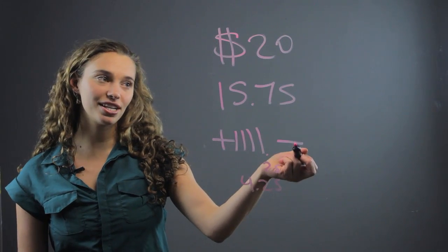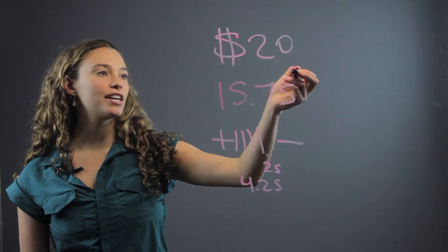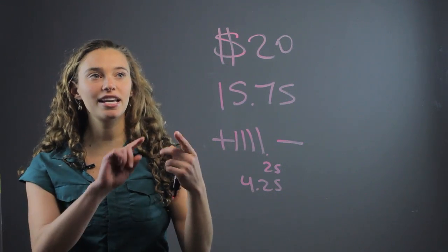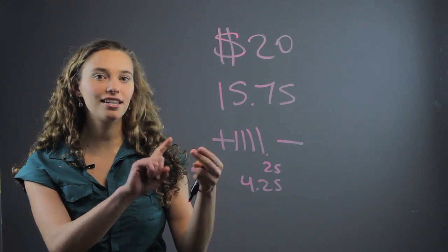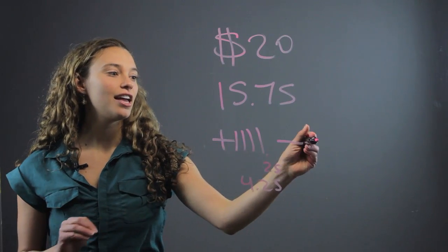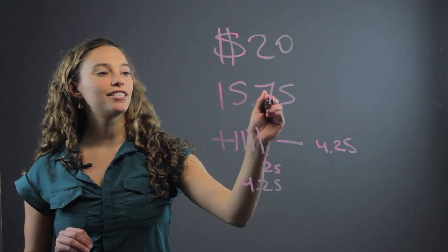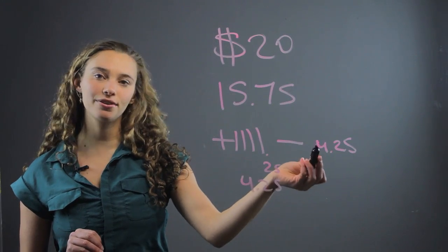The other way is counting down. You can start with 20 and you can count down. Okay, so 20, 19, 18, 17, 16. So that's four. And then you have to go 25 cents more down to get to $15.75. So that way is through subtraction.